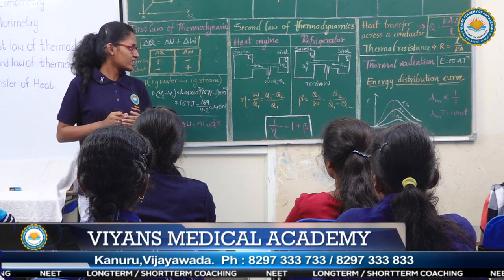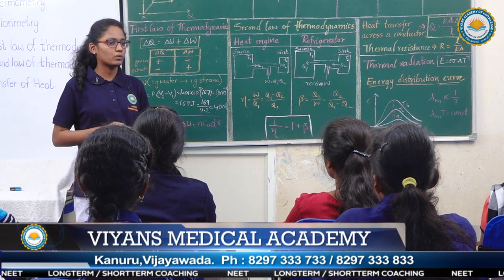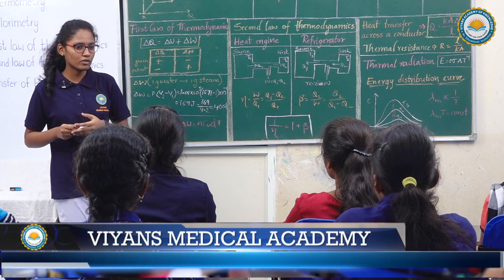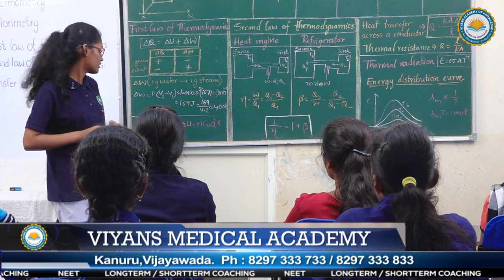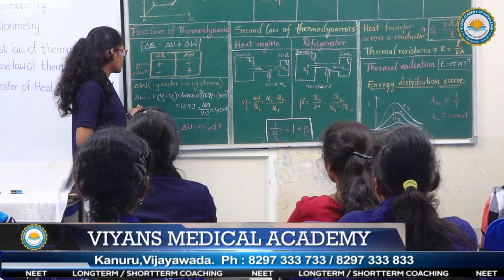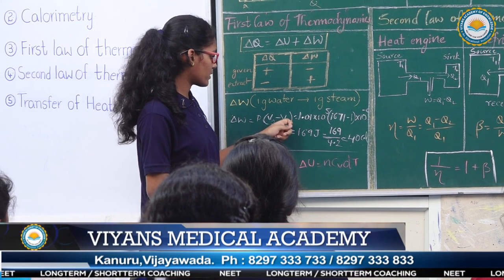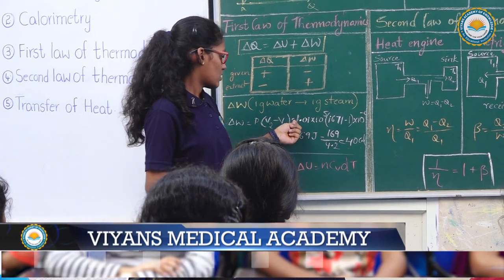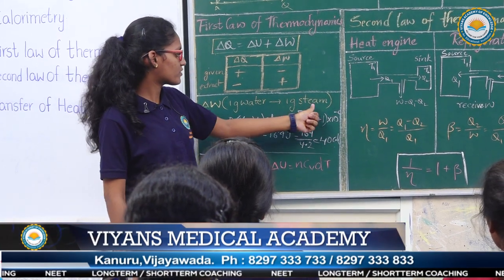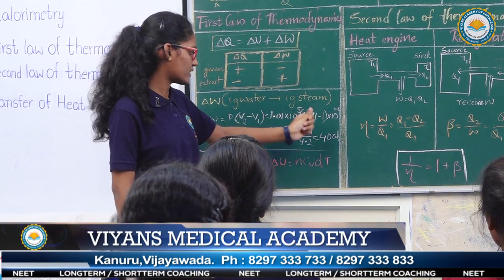We know the heat change when 1 gram of water is converted to 1 gram of steam. The amount of heat required to raise 1 gram of water to 1 gram of steam is 540 calories. Let us calculate the work done during this process. Work done during conversion of 1 gram of water to 1 gram of steam is P into (V2 minus V1). Here, P is 1.01 × 10^5 pascals. V2 is the volume of steam, that is 1671 cc, and V1 is the volume of water, that is 1 cc.